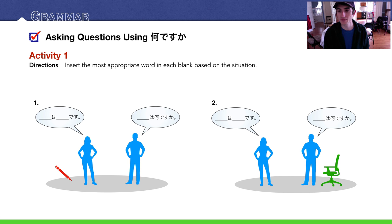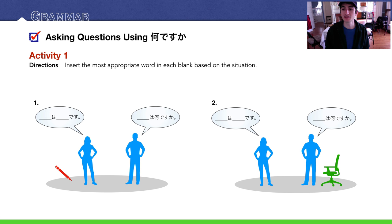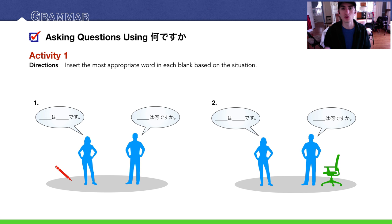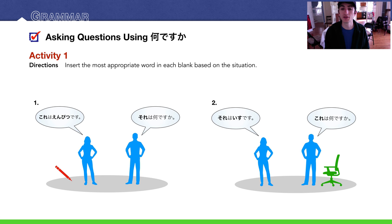Number two: the man is still asking and she's answering. This time the object is close to the questioner, so he uses これ: これは何ですか？ She answers that it's a chair. Because it's near him but far from her, she says それはいすです. Here are the answers in bold.